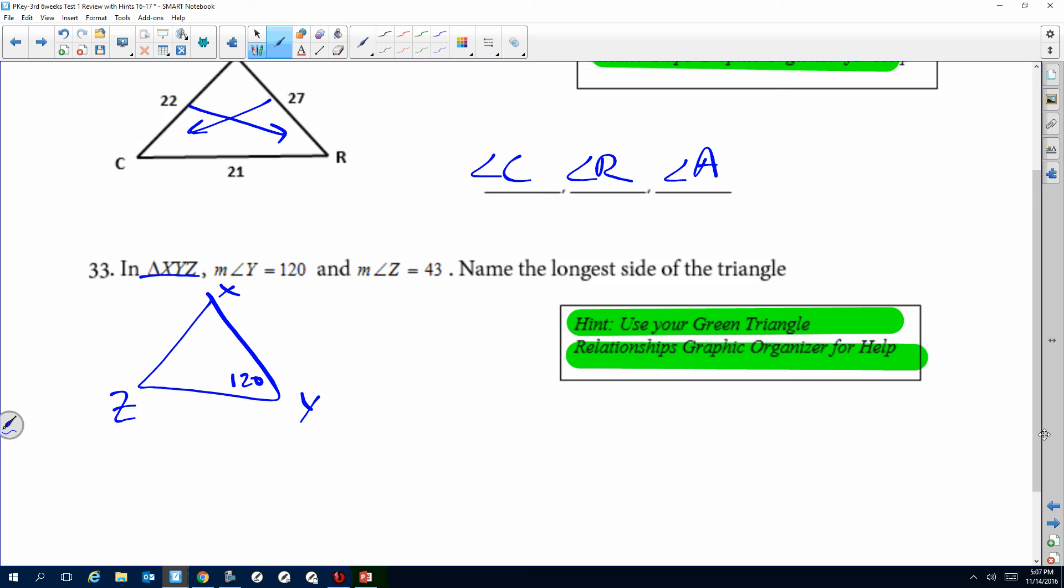We know sum of a triangle equals 180, so I'm just going to do 180 minus the 120 plus 43, which is 163. So basically I have 180 minus 163, and that would give us 17. So our missing angle that we have for X is 17. Now they want us to name the longest side of the triangle. Well it has to be with the longest angle, so that longest side would be ZX. It's opposite the biggest angle, which is Y.